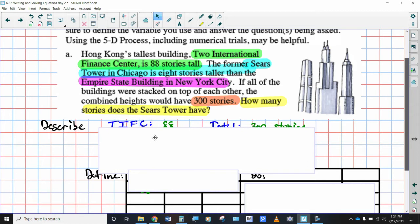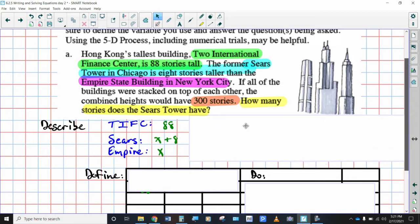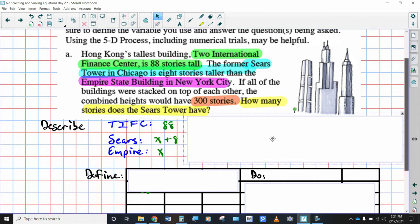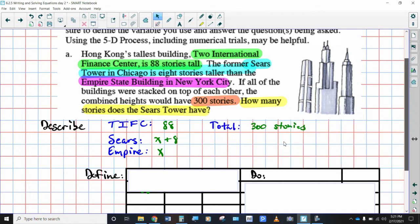So let's start off. Well, let's start over here. We've got our three towers. You got your Two International Finance Center, which they said was 88 stories tall. So I'm going to just write that in there. This is kind of like in green is the defined portion, but I'm going to show it again down here. Sears Tower is being compared to the Empire State Building and it says it is eight stories taller. So if the Empire State Building is X, this has to be X plus eight. And then they said total is 300 stories tall.